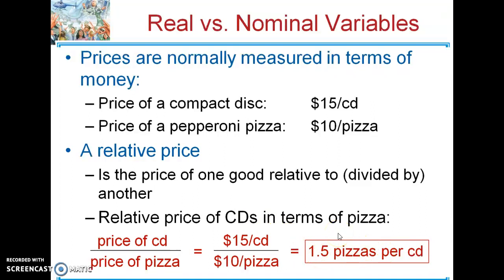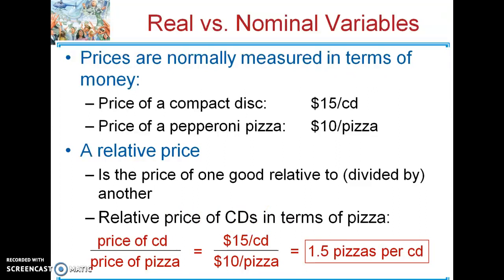Printing money will change these dollar prices. For example, if you doubled the money supply, the CD price would go from $15 to $30, but the pizza would go from $10 to $20, and the relative price — which is your real price — would stay exactly the same. Relative prices are going to be set by the forces of supply and demand, which is what changes pricing in your economy.